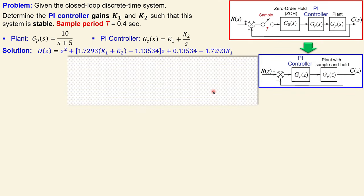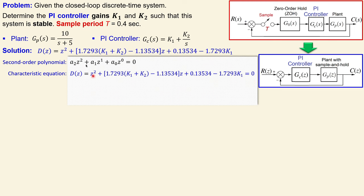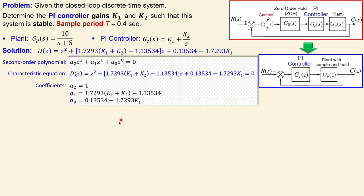Before moving on, since we have a second order polynomial, we write the general form: a2*z^2 + a1*z + a0 = 0. Comparing with our characteristic equation, we identify: a2 = 1, a1 is the coefficient in front of z, and a0 is the constant term. These are the coefficients we need to work out the Jury stability test.